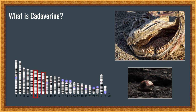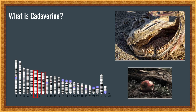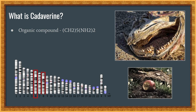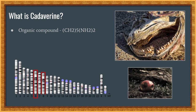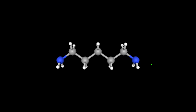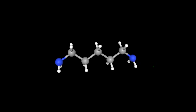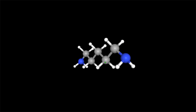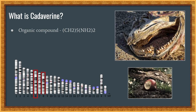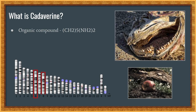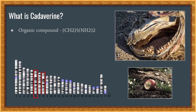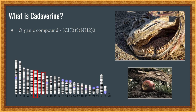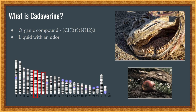Next, what is cadaverine? Well, cadaverine, also known as pentane-1,5-diamine, is an organic compound with the formula (CH₂)₅(NH₂)₂. Here we are again, but this time this is cadaverine in 3D, and it is classified as a diamine, so it has two amine groups.